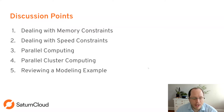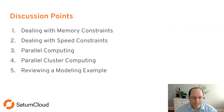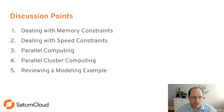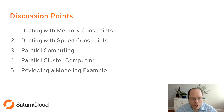Just to give an overview of what we're going to be talking about: we'll first discuss memory constraints — that's the first thing you have to deal with when working with larger datasets, specifically getting the dataset into RAM. After that, we'll talk about speed constraints — what to do when your analyses are taking a long time because your data is large. Under that, we'll cover parallel computing, parallel cluster computing, and then review a modeling example. We'll give you strategies for each of these discussion points.